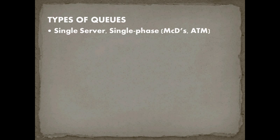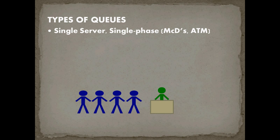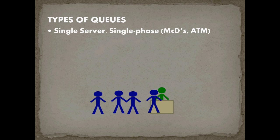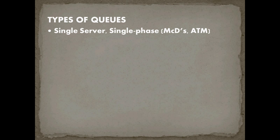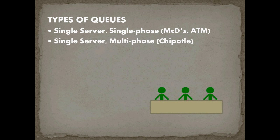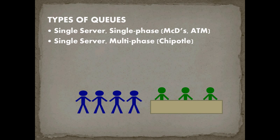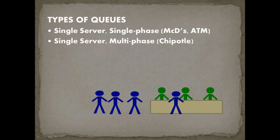So what are the types of queues out there? The first is a single server, single phase queue — like McDonald's or an ATM. You have one server providing service to a single line. A customer comes up, gets help, the line moves forward, and they leave. The next type is a single server multi-phase queue — think of Chipotle. You have a single line, and once at service, customers move through different stations — getting their tortilla and meat, then salsa, then checking out — all without waiting in a new line. Then they can exit to eat their burrito.